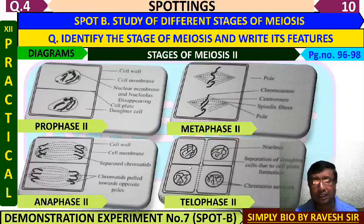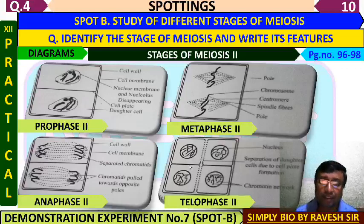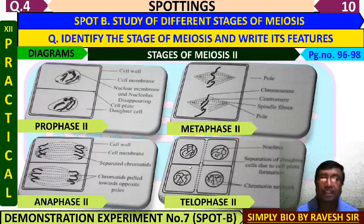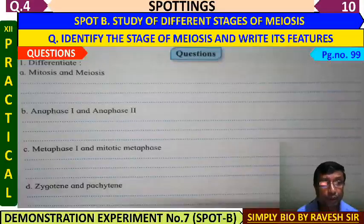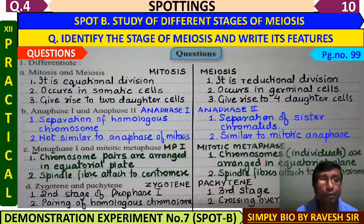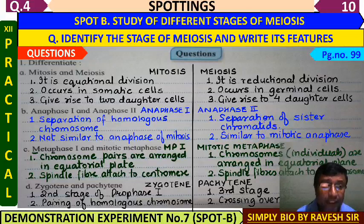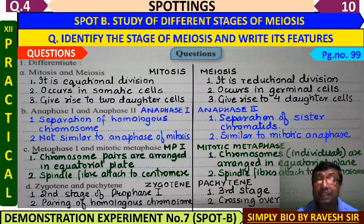In short, the process of meiosis has two main phases: meiosis 1 and meiosis 2. Meiosis 1 is the reductional division and meiosis 2 is the equational division. Questions we also have to study include: differentiate mitosis and meiosis, Anaphase 1 and Anaphase 2, Metaphase 1 and mitotic metaphase, and zygotene and pachytene.